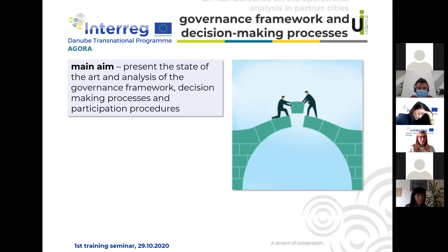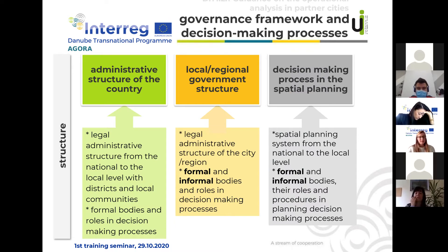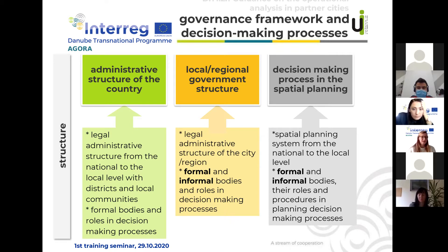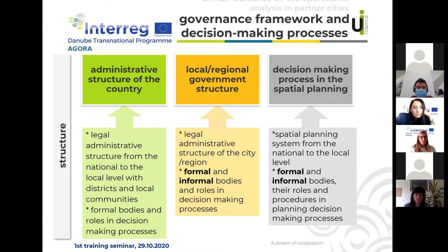The main aim of the second chapter — governance framework and decision-making processes — is to present the state of the art and analysis of the governance framework, decision-making processes, and participation procedures. The chapter is divided into three sub-chapters. The first is devoted to the administrative structure of the country, where territorial partners will present their legal administrative structure from the national to the local level, including districts and communities with their formal bodies and roles in decision-making processes.